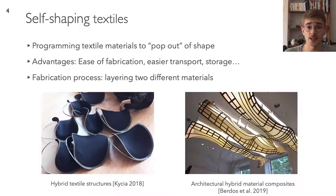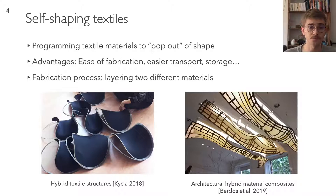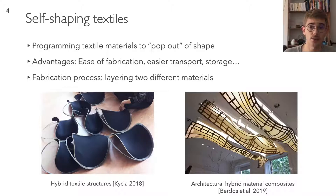One technique that we think could spark interesting design ideas is self-shaping textiles. The idea is to take fabric, a very common and convenient material in architecture, and engineer it in such a way that it itself deploys into shape. Self-shaping textiles are able to automatically pop out because they are fabricated from pre-stretched fabric, so you can think of them as a special kind of tensile structure.